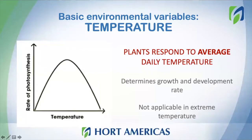Let's start with temperature. Temperature is one of the most important variables for growers. The first thing we do is look at the recommended levels of temperature and try to maintain these conditions inside of the growing system. It's very important to understand that plants respond to the average daily temperature, meaning you can be flexible and have fluctuations, but the average daily temperature should remain between the recommended levels. Of course, this is not applicable to extreme temperatures.